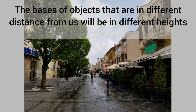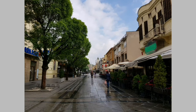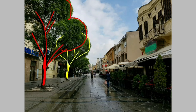The bases of objects don't look like they are on the same level. Do you see the point where the first tree touches the ground, and where the second tree touches the ground? The base — the lower point of the trees — went up with every tree and continues to climb as they become further. The trees are not actually on different heights. Objects in the front also hide objects behind them; the first tree covers the second tree, and so on.